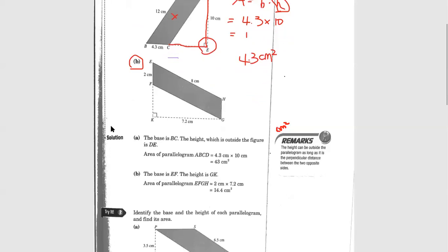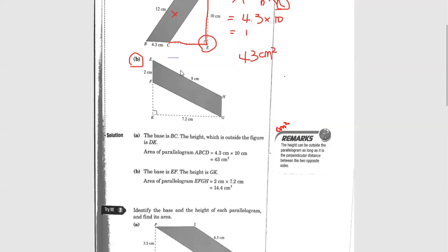We're going to move to question B. If you see the parallelogram like this, you need to extend the line and then figure out the perpendicular height. The area for parallelogram EFGH: the base is 2.